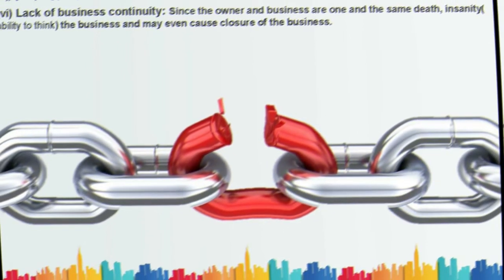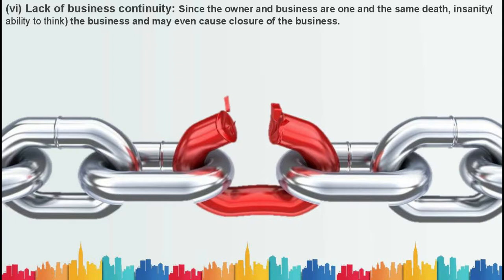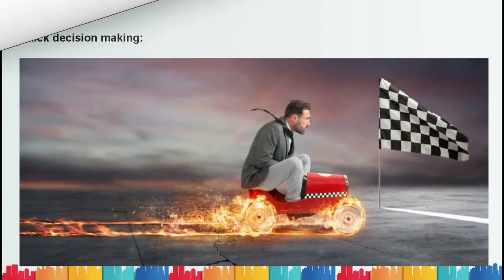The sixth feature is lack of business continuity. Since the owner and the business are one and the same, death or insanity of the owner may cause closure of the business. The business will not continue forever — it will end at some point. This form has less continuity compared to other forms like partnership or joint stock company.